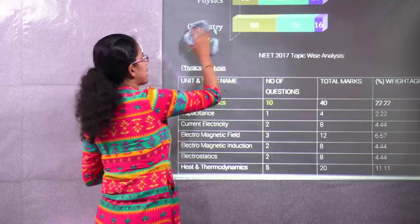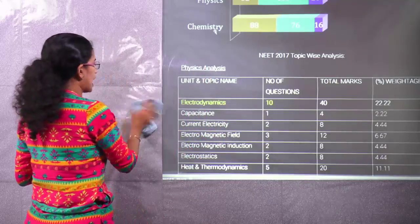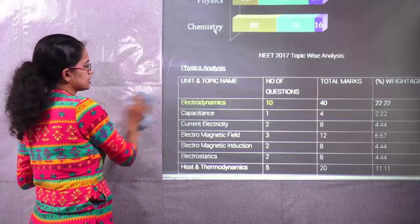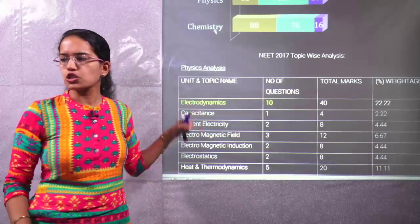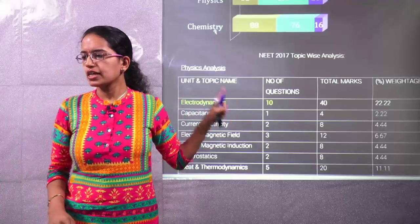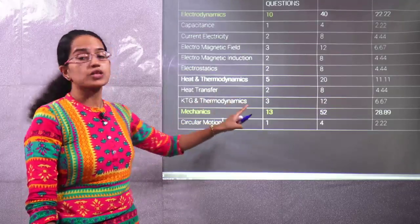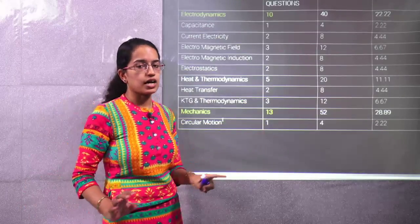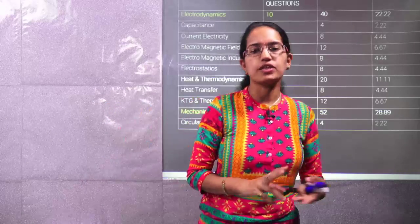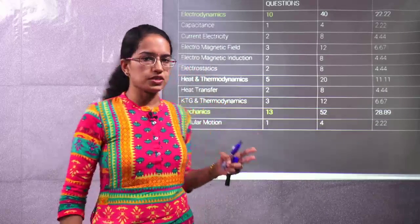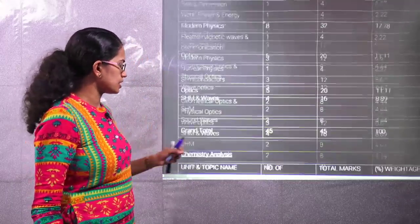Now for the topic-wise breakup — when you are left with the last few days and looking for selective study, here are topics you should not miss. For physics, electrostatics is very important, and mechanics had around 13 questions in 2017. So mechanics and electrostatics are very important sections — do not miss either of these. Towards the end, focus and practice on these topics thoroughly.